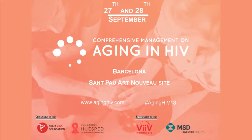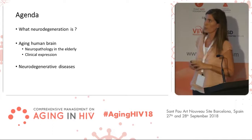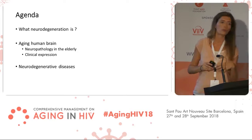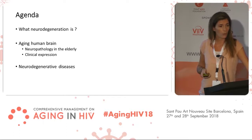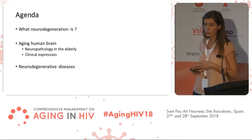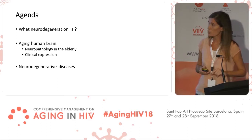I will try to review the age-related neurodegeneration, which is a complex topic. But we will try to focus mainly in three aspects. First, we will briefly review what neurodegeneration is. Then we will focus on the normal aging human brain — specifically the neuropathology — and the clinical expression of cognitive changes in the elderly. In the last slides, we will remark some important points of the neurodegenerative diseases.